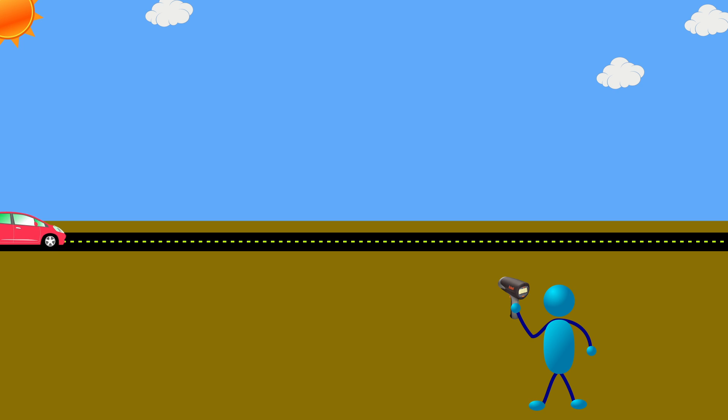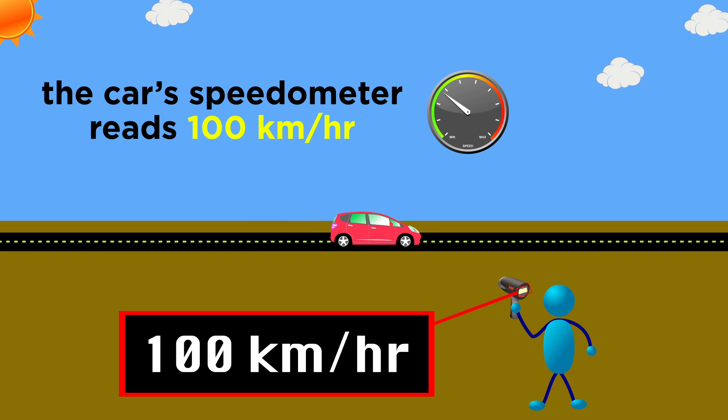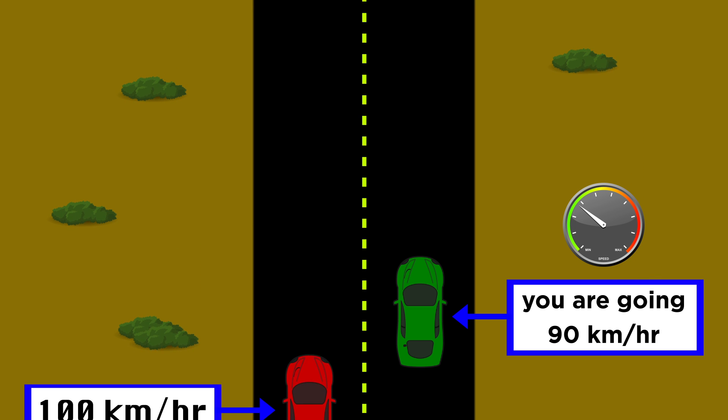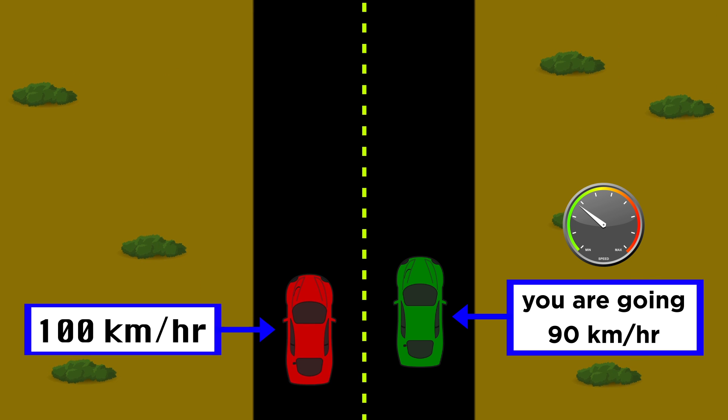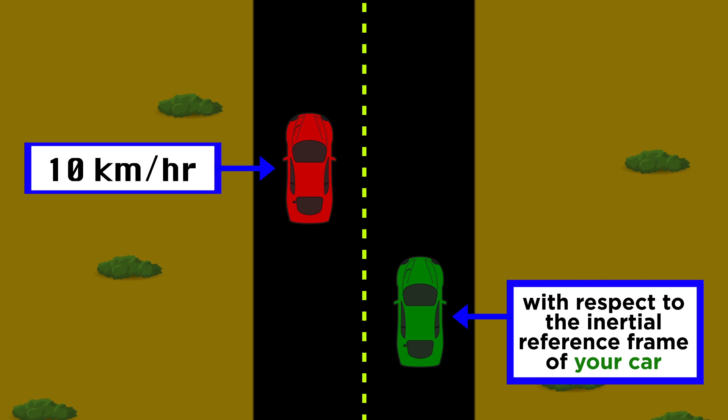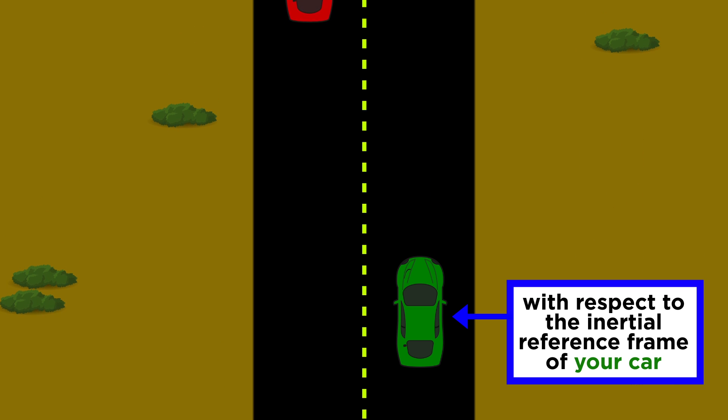If you are standing still on the ground and you see a car go by at 100 kilometers an hour, you will measure the car's speed as being 100 kilometers an hour. But if you are in another car going 90 kilometers an hour on the same road, and that first car passes you, you will measure the car's speed as being 10 kilometers an hour.